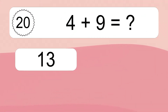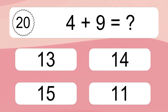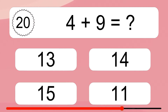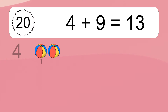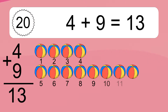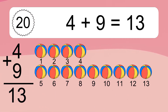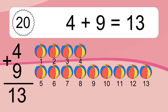4 plus 9 equals what? 4 plus 9 equals 13. Let's count it: 1, 2, 3, 4, 5, 6, 7, 8, 9, 10, 11, 12, 13.